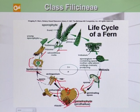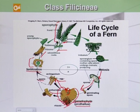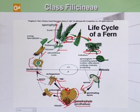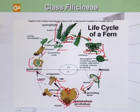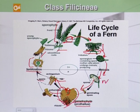The young sporophyte body has a frond, and a frond consists of a pinna. On the other side of the pinna, we have a sorus. The sorus has a flap-like structure called the indusium, and inside the indusium is the sporangium. A single sporangium undergoes meiosis, and as a result many haploid spores are produced. This concludes our discussion of class Filicinae.